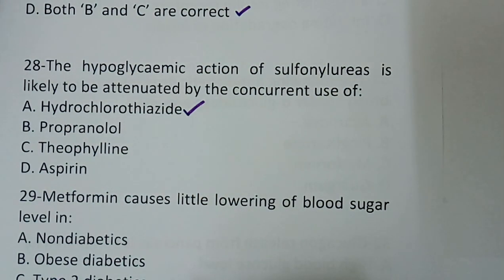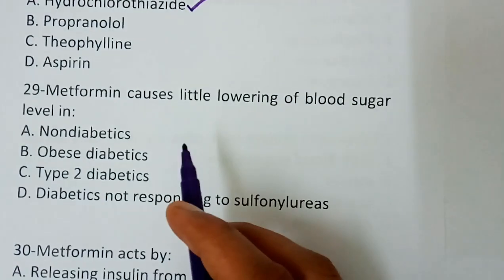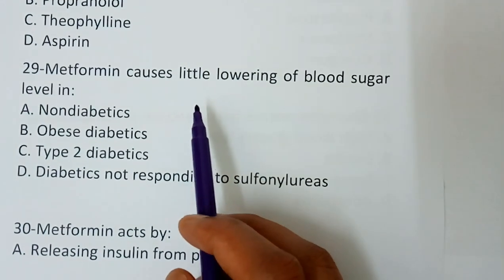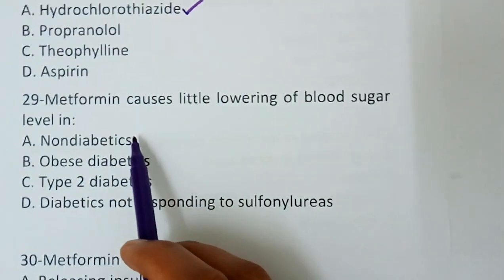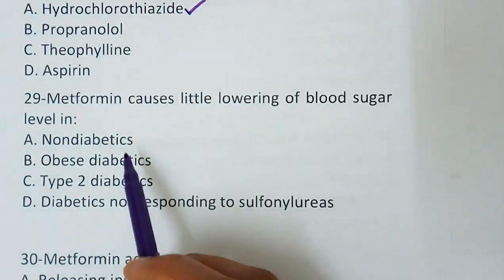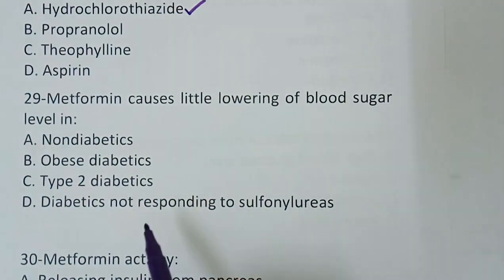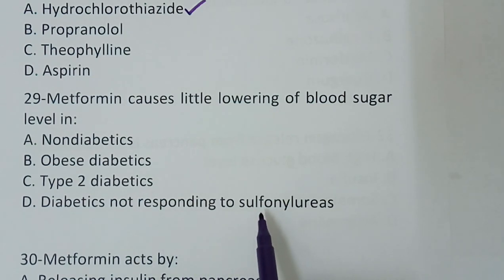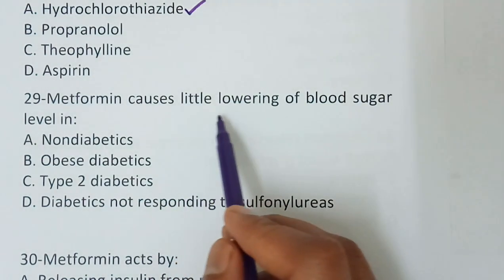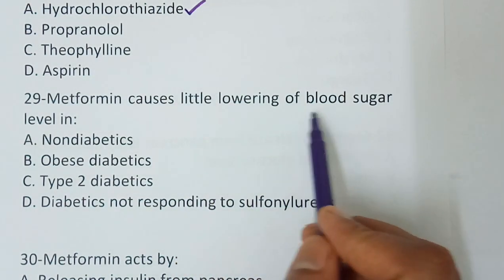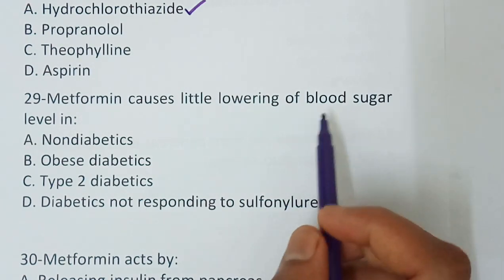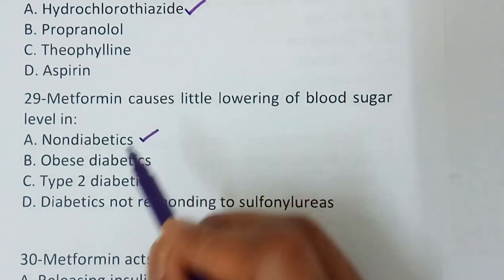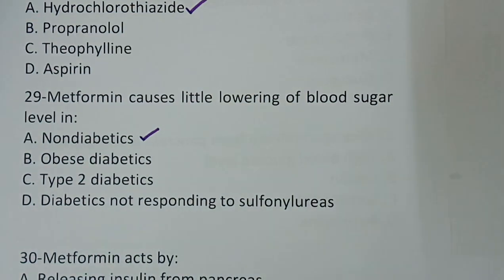Question number 29 — metformin causes little lowering of blood sugar level in: option A, non-diabetics; option B, obese diabetics; option C, type 2 diabetics; option D, diabetics not responding to sulfonylurea. The correct answer is non-diabetics — metformin causes little lowering of blood sugar in non-diabetic subjects.